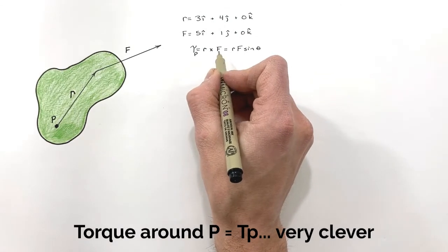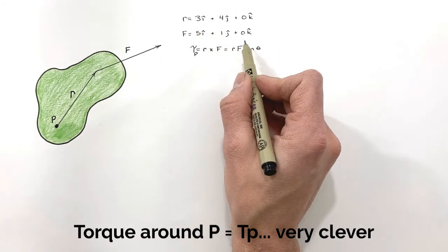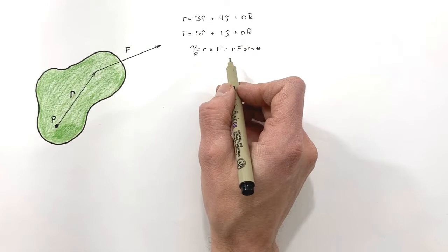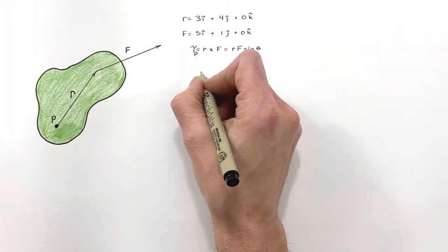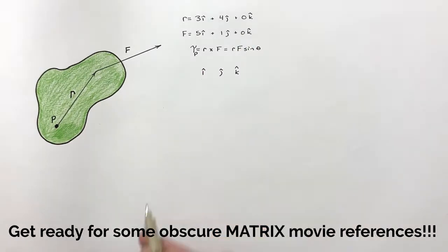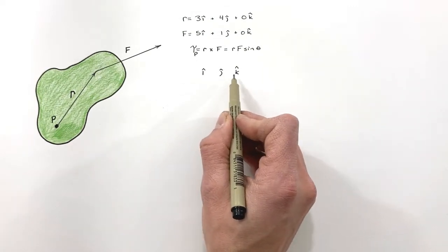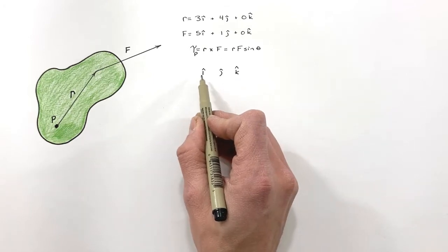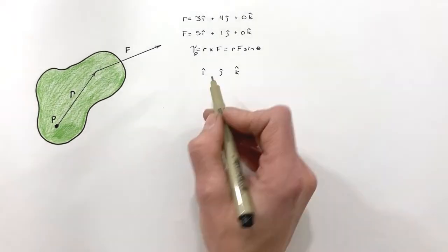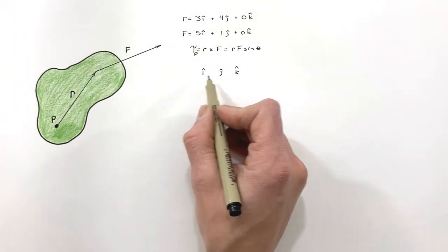And to solve a cross product, what we do rather than working out magnitudes and directions, is we set up a three by three matrix. Now the first line of our three by three matrix is simply defining the three directions in which we're dealing. We have an i, j, and a k direction. And this is based on just a regular coordinate plane.